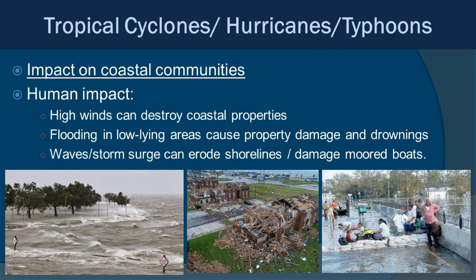These storms have a huge amount of impact on humans. The high winds destroy a lot of property, especially along coastlines where there's not a lot of protection. By far, however, the factor that generally causes the most loss of life has to do with flooding, especially in low-lying areas, putting people in danger if they haven't evacuated. The damage to property during flooding is also pretty severe.